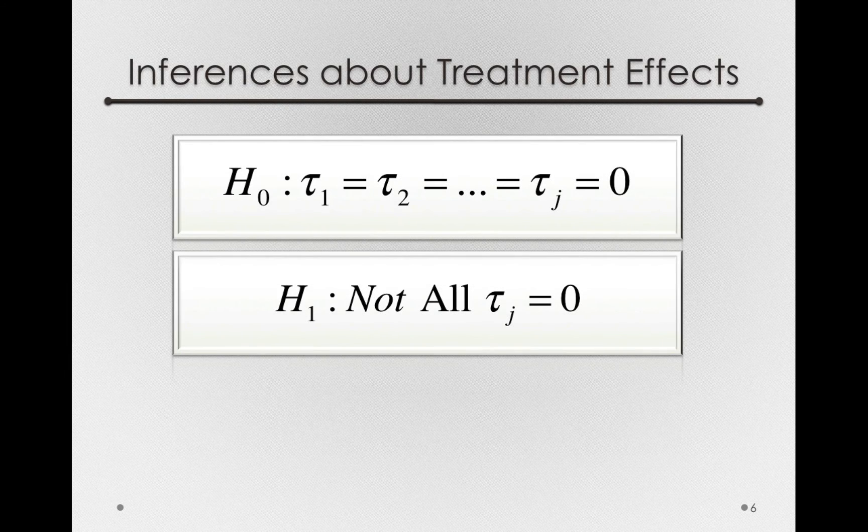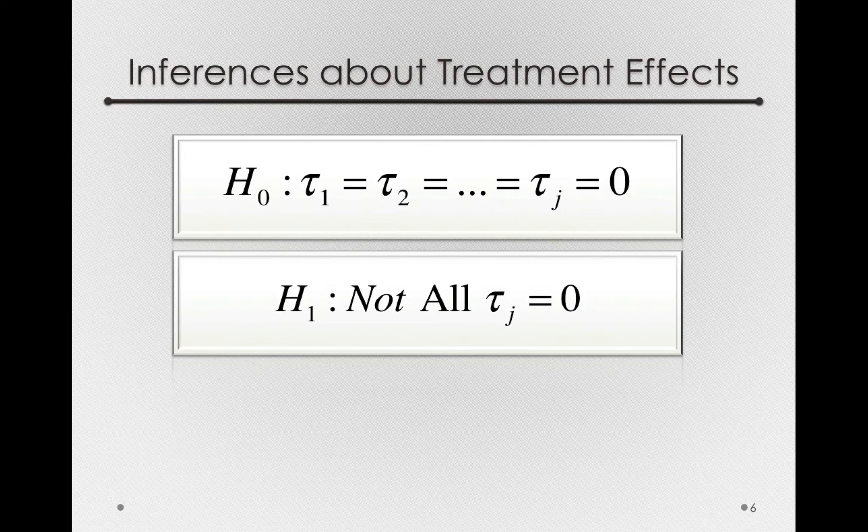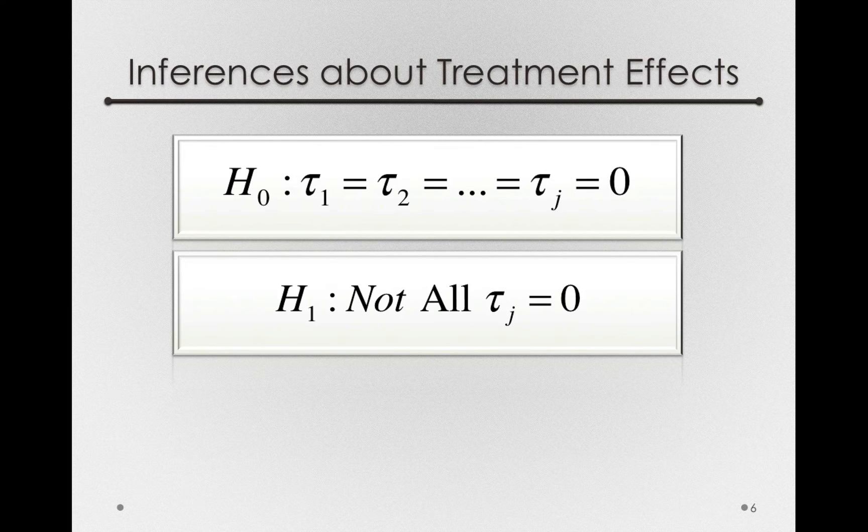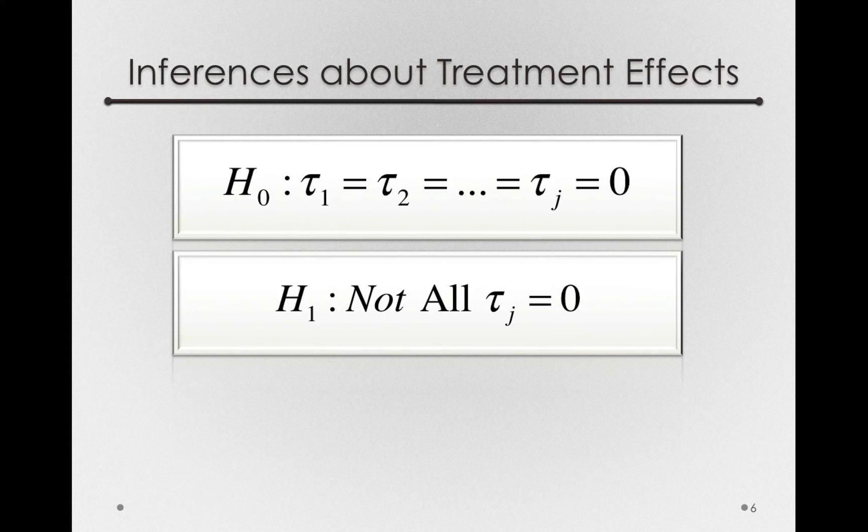To remind ourselves, our inferences are about these tau's, so what we need is a method that allows us to test, at once, whether we think these tau sub j's are actually zero. And the way we're going to do this is by an analysis of variance.